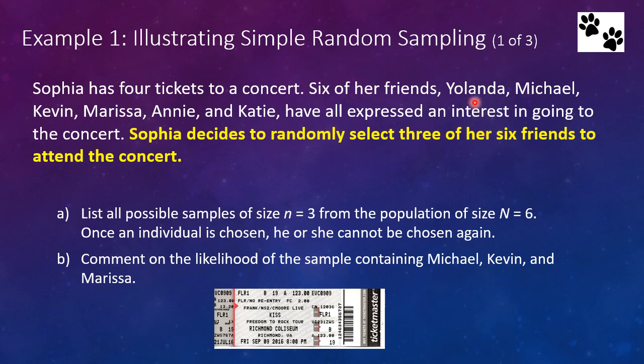So Yolanda, Michael, Kevin; Yolanda, Michael, Marissa; Yolanda, Michael, Annie, etc. So see if you can come up with all the possible samples. Hit pause and then we'll continue on. Okay, once you've done all the samples, see if you can figure out what's the likelihood of a sample containing these specific three individuals: Michael, Kevin, and Marissa. Again, hit pause, try this out, and then come back to us when you're ready.